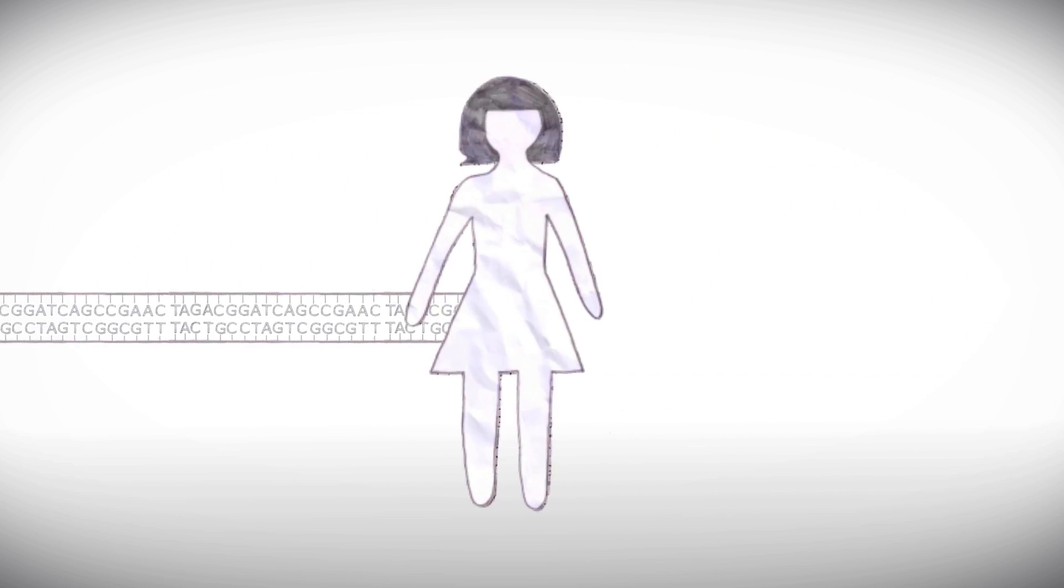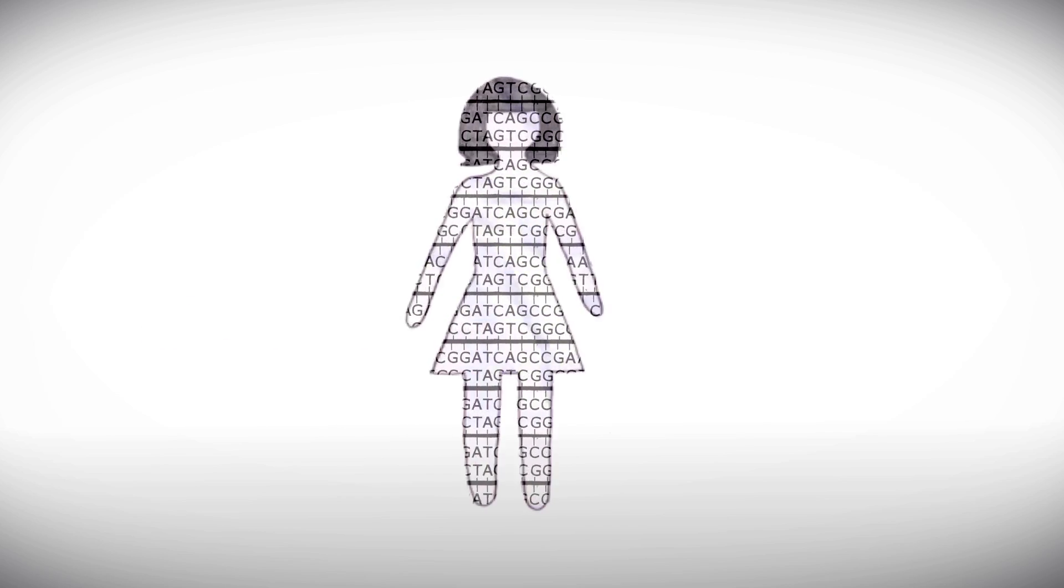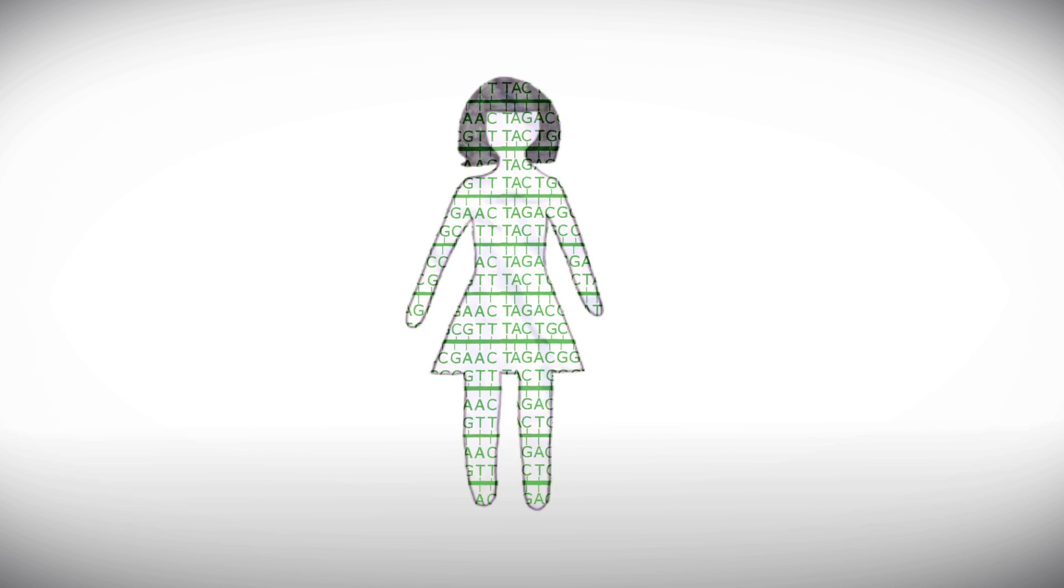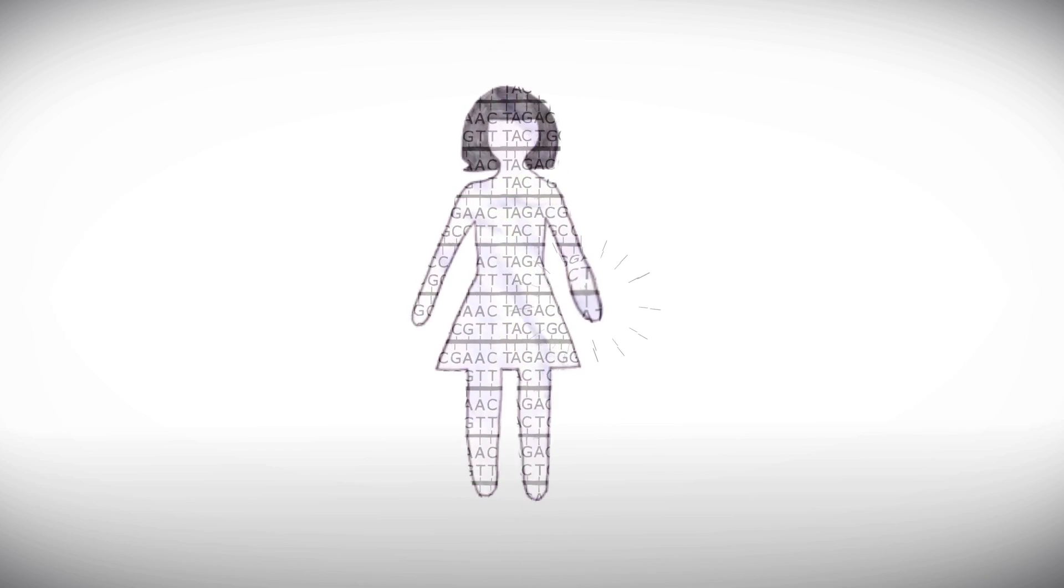It's the same with your DNA. The order of those A's, C's, G's, and T's helps to determine almost everything about you: from your skin color, your eye color, whether you're tall or short, left-handed or right.